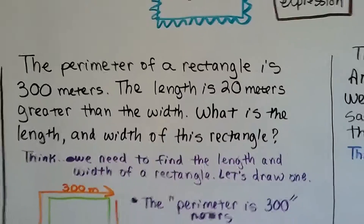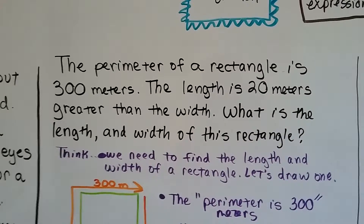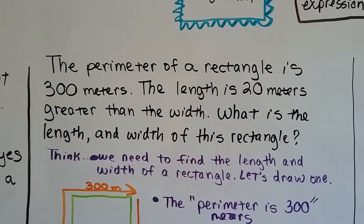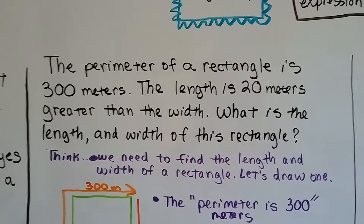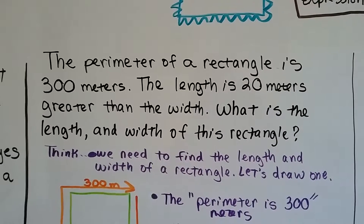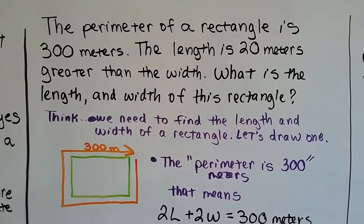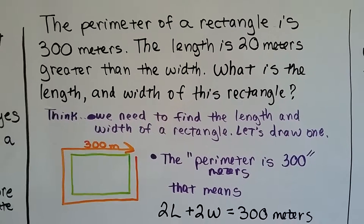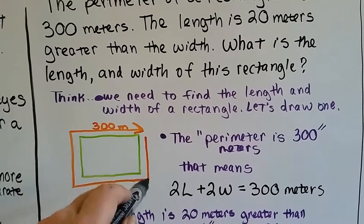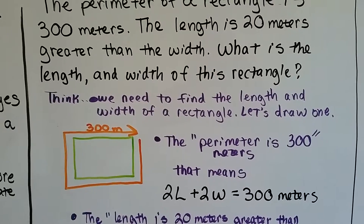Here's the perimeter problem: the perimeter of a rectangle is 300 meters. The length is 20 meters greater than the width. What is the length and width of this rectangle? Perimeter means the measure of the outside, like a fence around it — all four sides equal 300 meters.